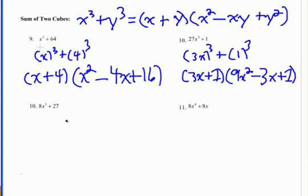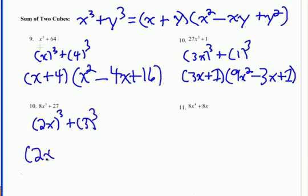Over here — GCF, there is none. What size is it? It's a binomial. We see it's got a cube exponent, 8 is a perfect cube, 27 is a perfect cube, and it's a sum — so it's a sum of two cubes. 2 cubed is 8, x cubed is x cubed, and 3 cubed is 27. So you end up with (2x plus 3) for the first parenthesis. Don't forget to square the 2: 4x squared. Opposite sign, multiply the two terms together, and then square the last term.